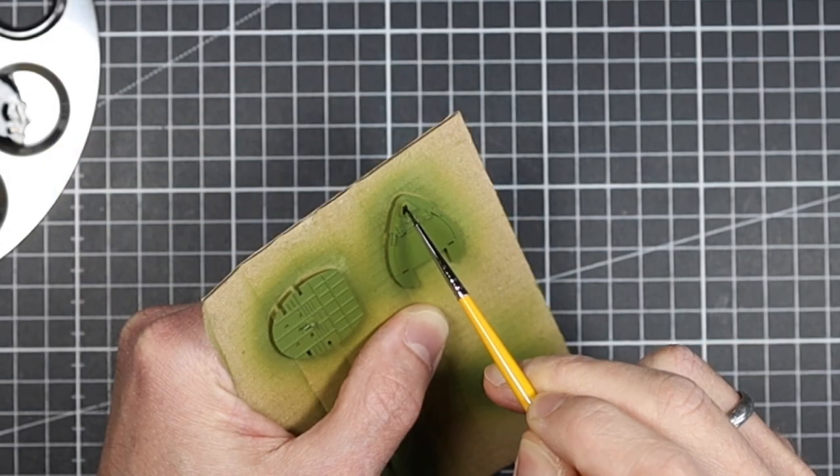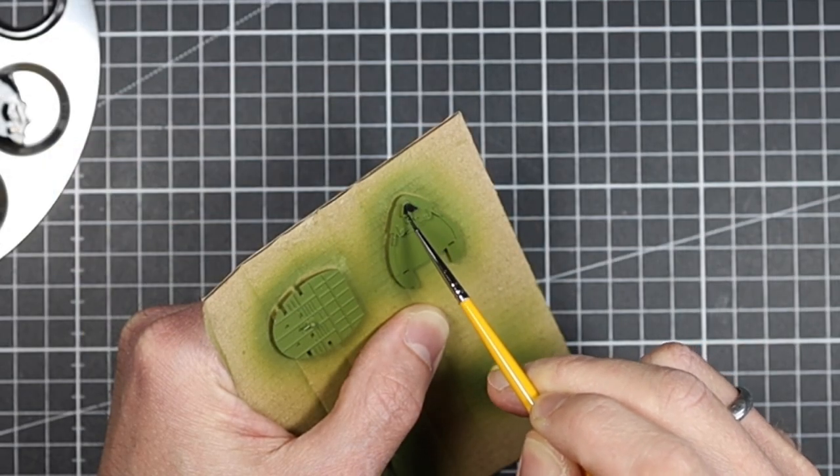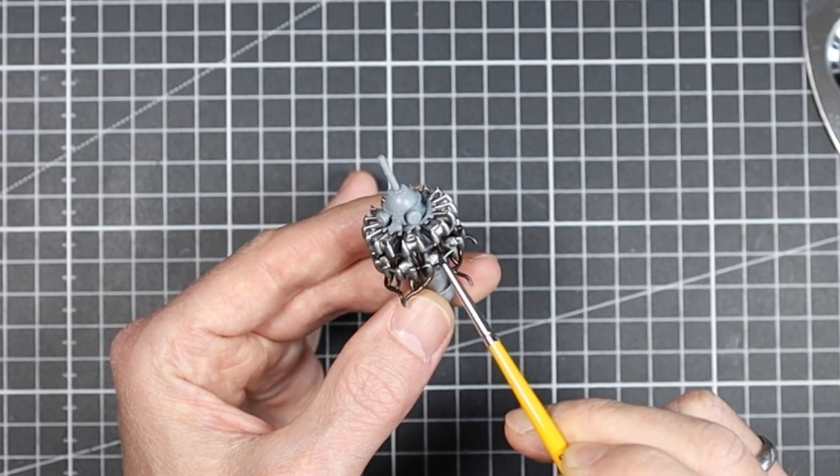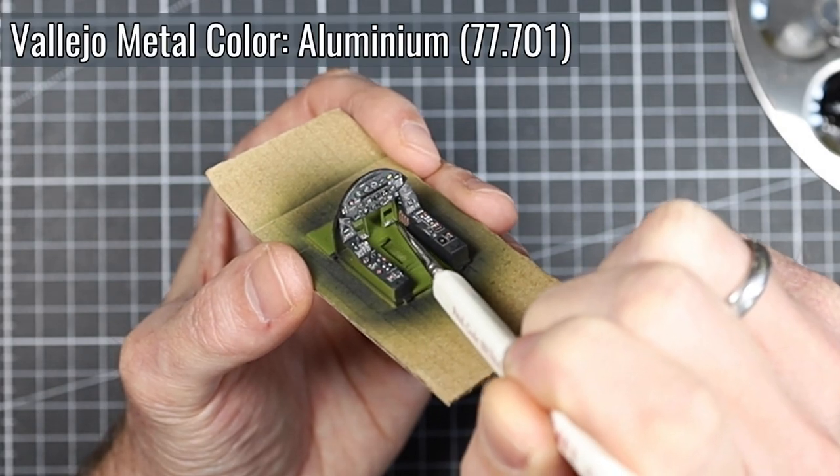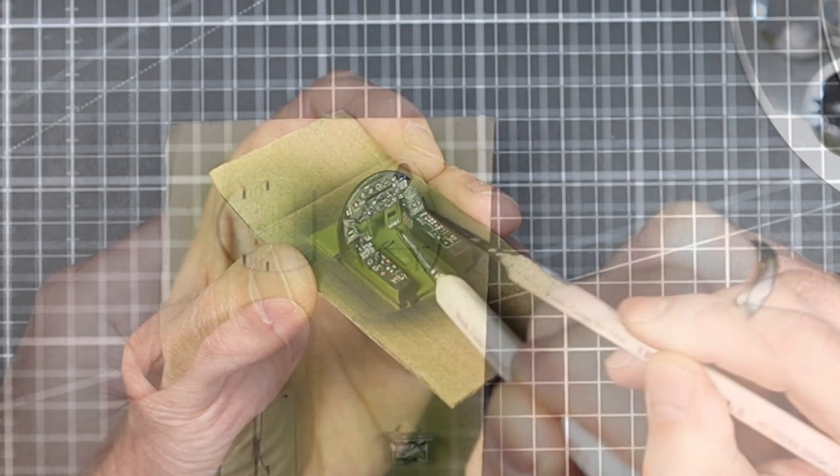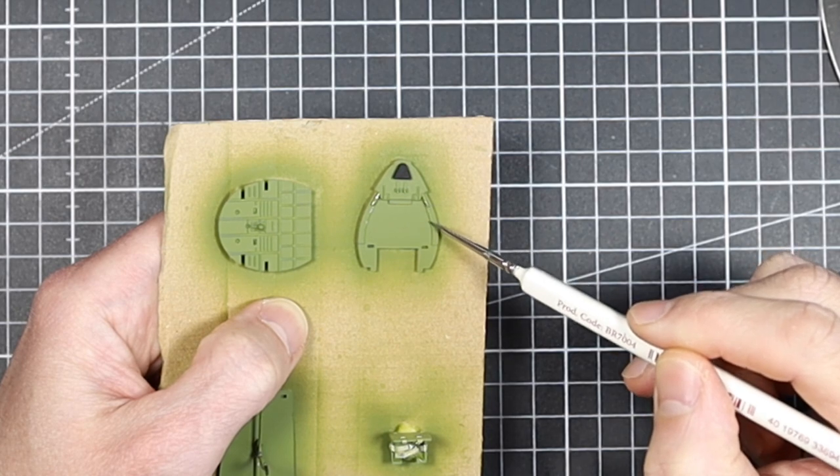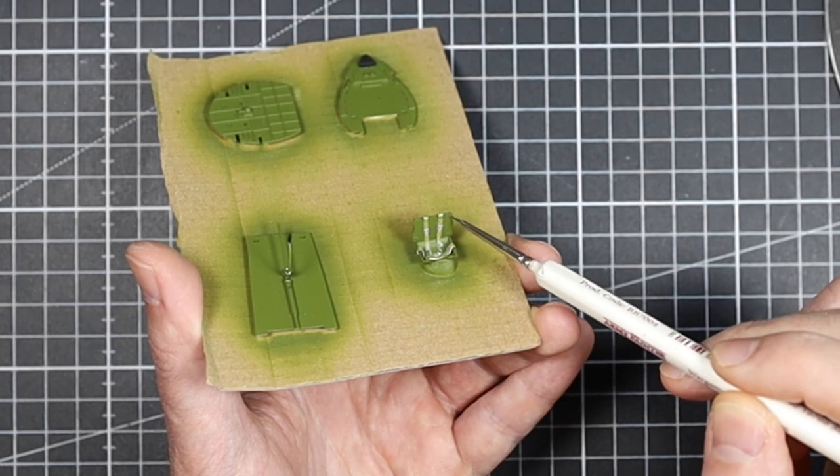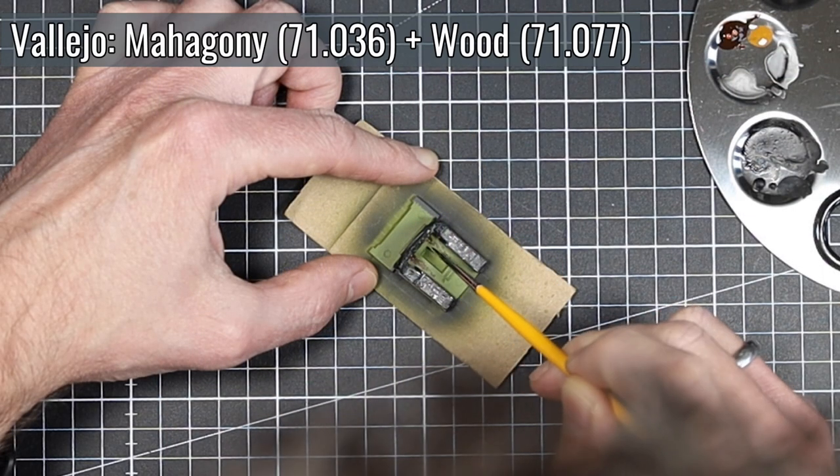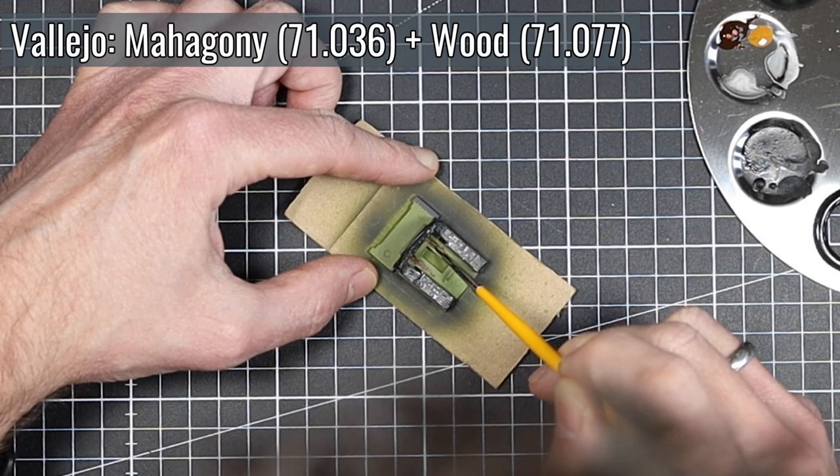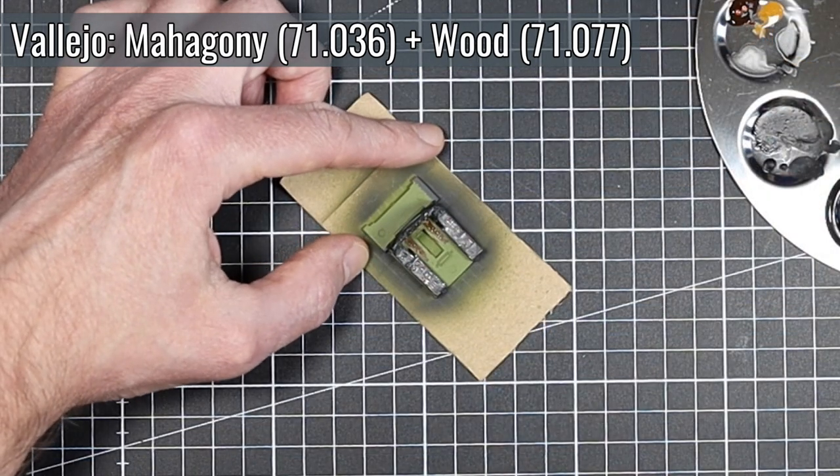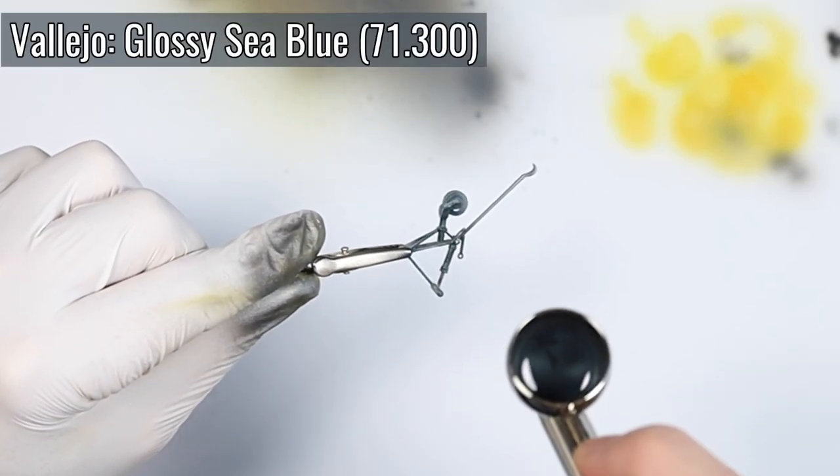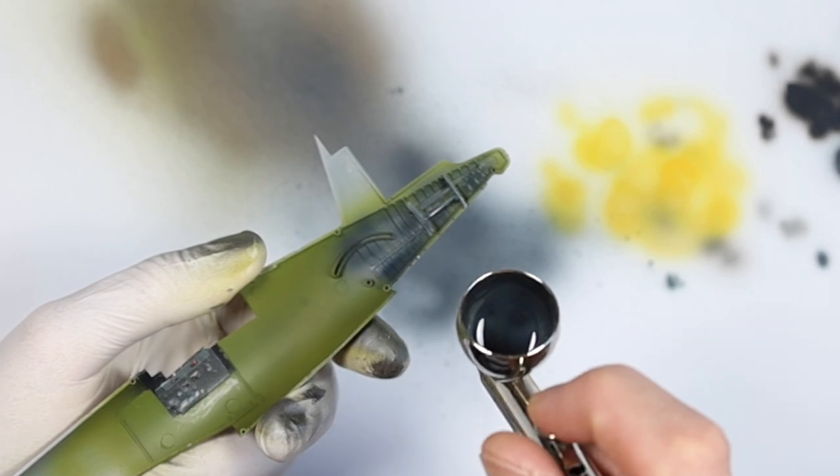Further details in the cockpit and on the engine are painted on with a brush. For this I mainly use acrylic paints from Vallejo and AK. Here I start with the main color Vallejo Glossy Sea Blue. But more on that later.